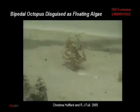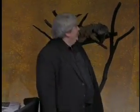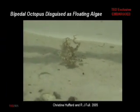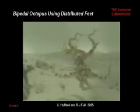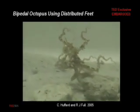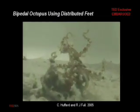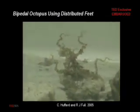It was discovered by Christine Hufford and filmed by C-Studios right here from Monterey. We've also described another species of bipedal octopus. This one disguises itself as floating algae. It walks on two legs and holds the other arms up in the air so that it can't be seen. And look what it does with its foot to get over challenging terrain — it uses that beautiful distributed foot to make it as if those obstacles are not even there. Truly extraordinary.